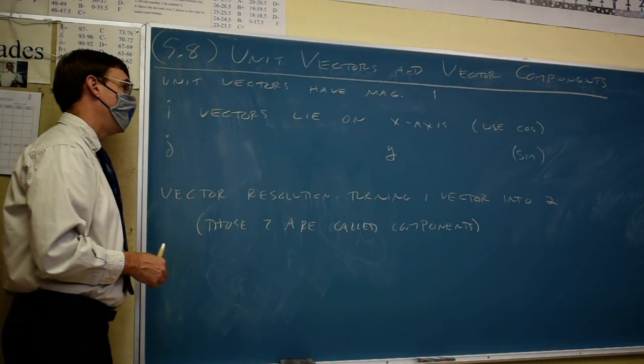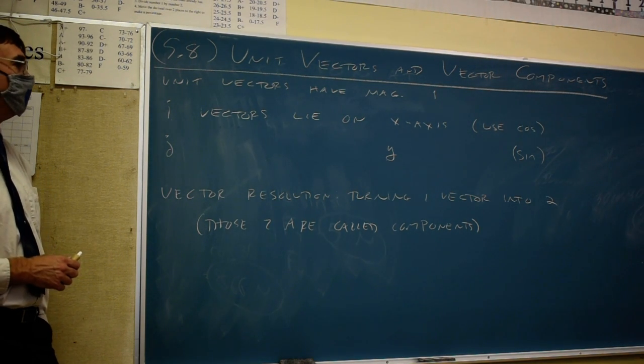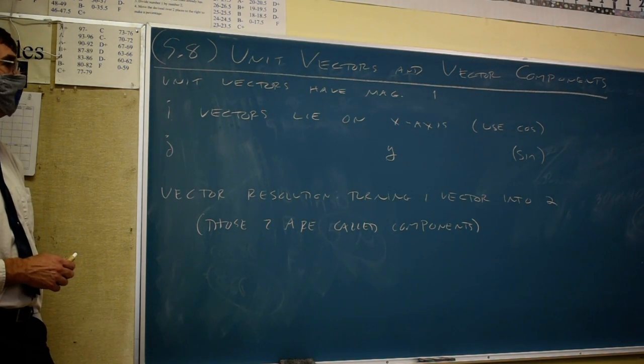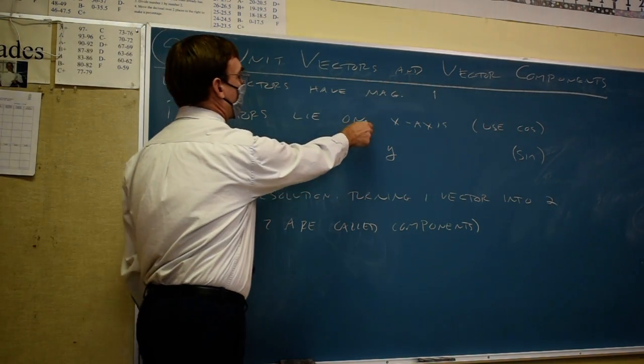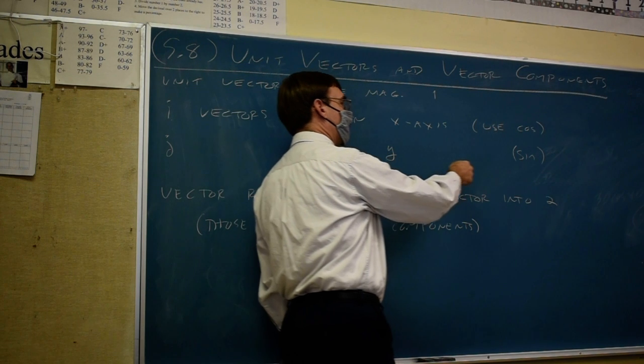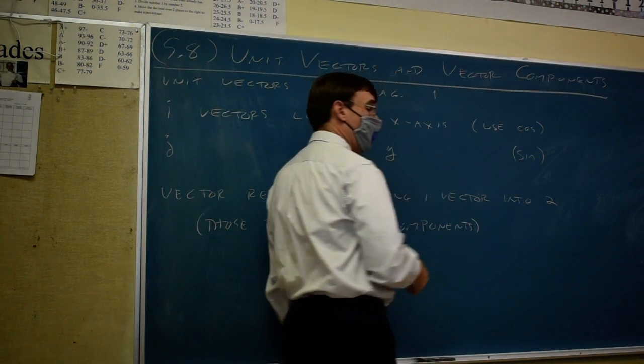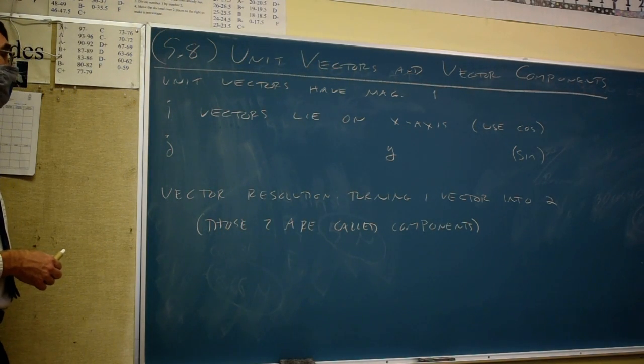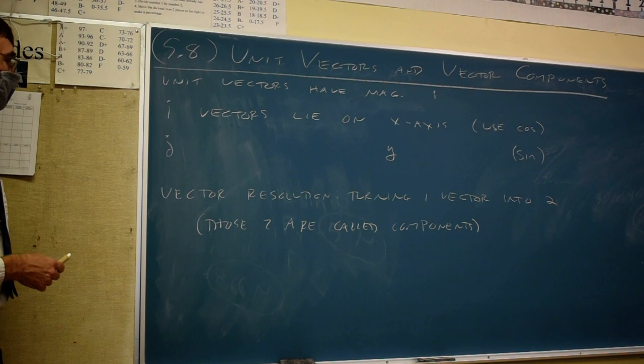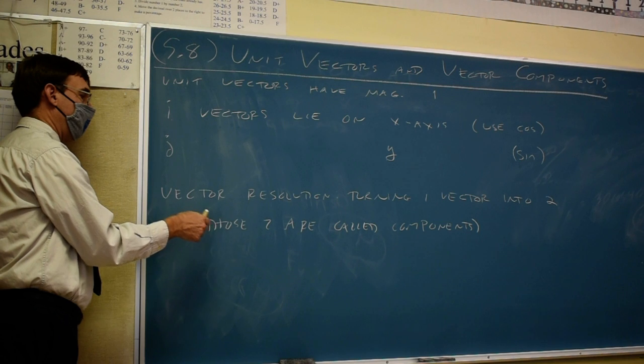We're going to use the cosine button on our calculator for i vectors and the sine button for j vectors. To keep these straight shouldn't be a dramatic problem, because the alphabet helps you. They've sorted these by either coincidence or purpose in alphabetical order. i is before j, just like x is before y, and just like alphabetically, cosine would come up in a dictionary before sine. What we're going to do with these unit vectors is make a thing called vector components.